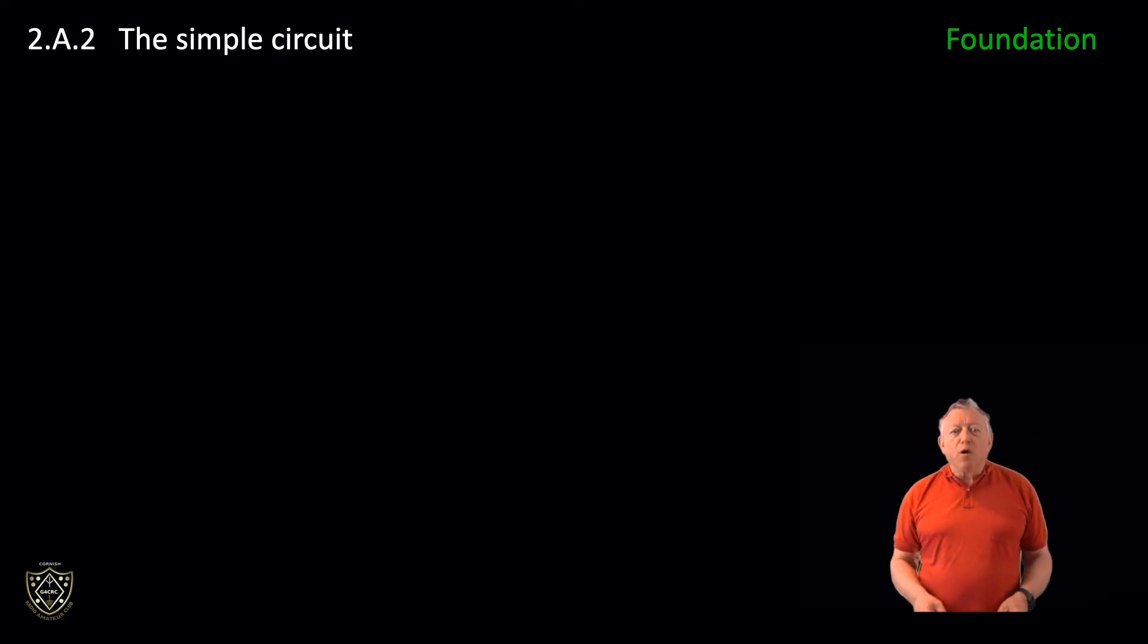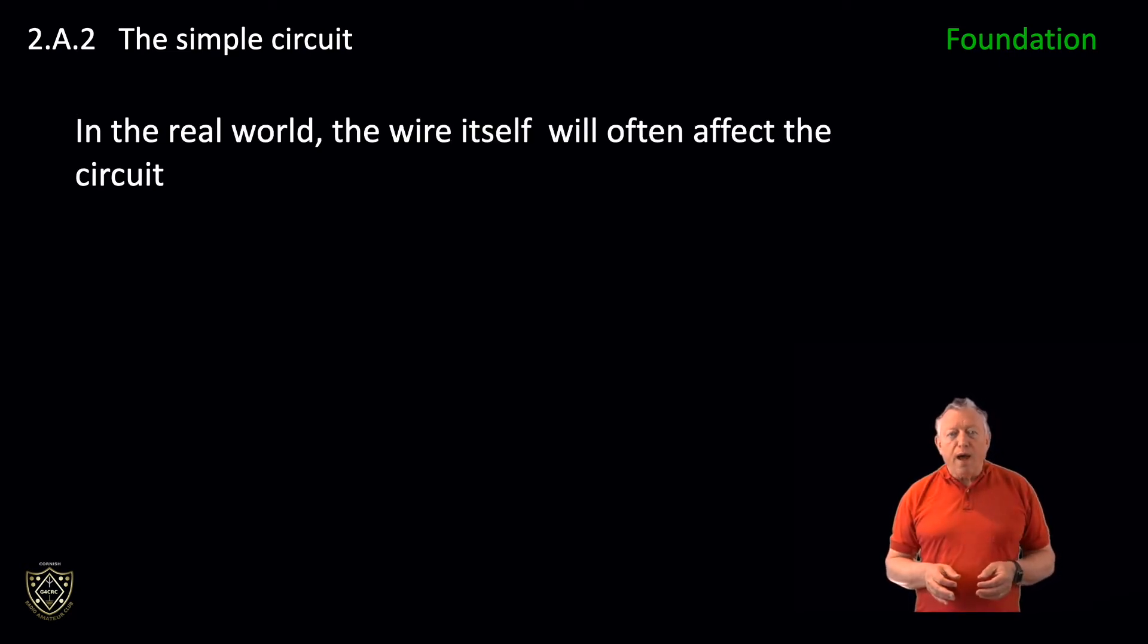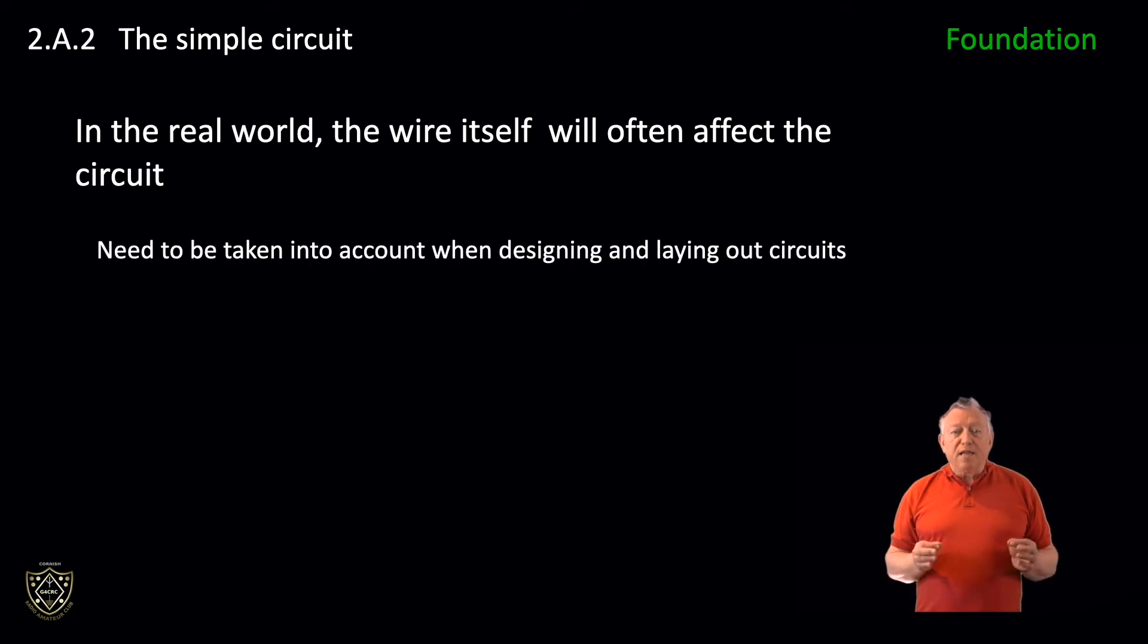Firstly, a quick comment on interpreting schematic circuits. If you connect electronic components together with wire, in the real world, the wire itself will often affect the circuit. It has resistance, inductance, and capacitance. Indeed, due to its leads and physical construction, a resistor may exhibit quite different effects at DC and VHF. These effects need to be taken into account when designing and laying out circuits.